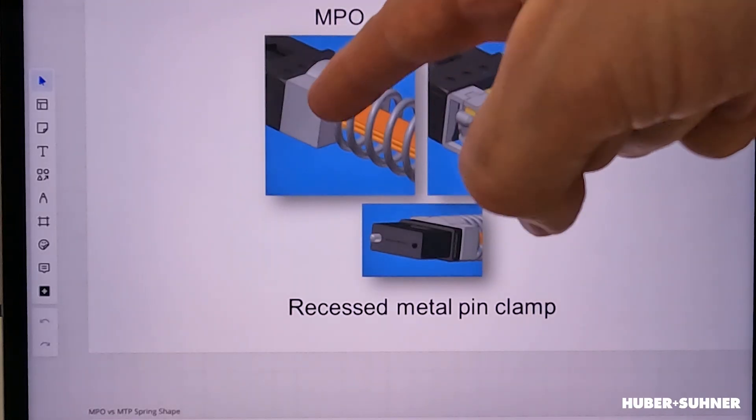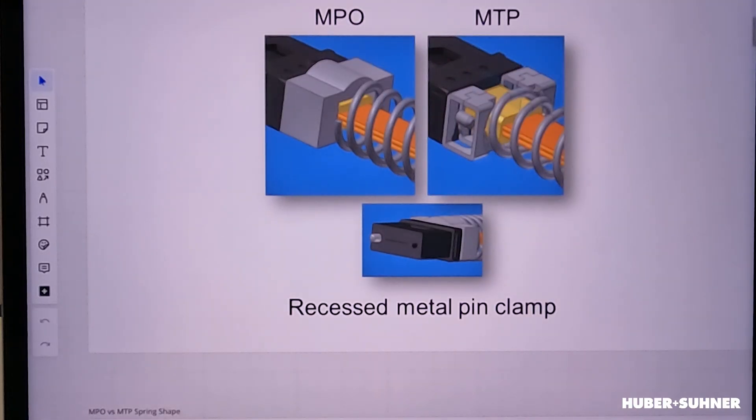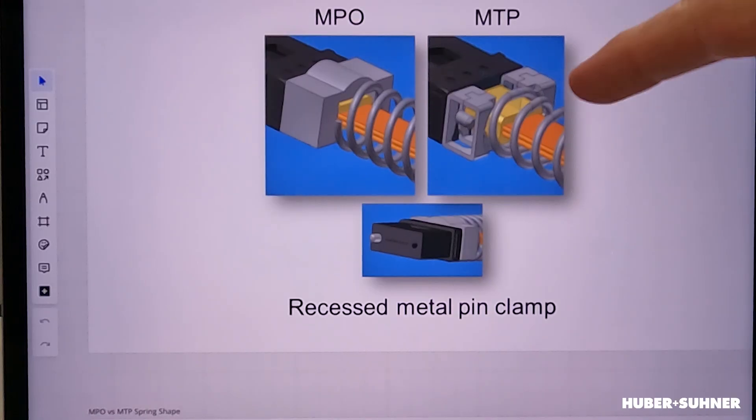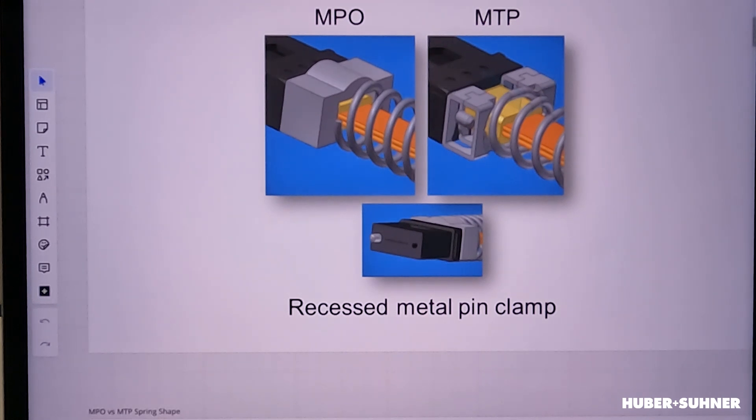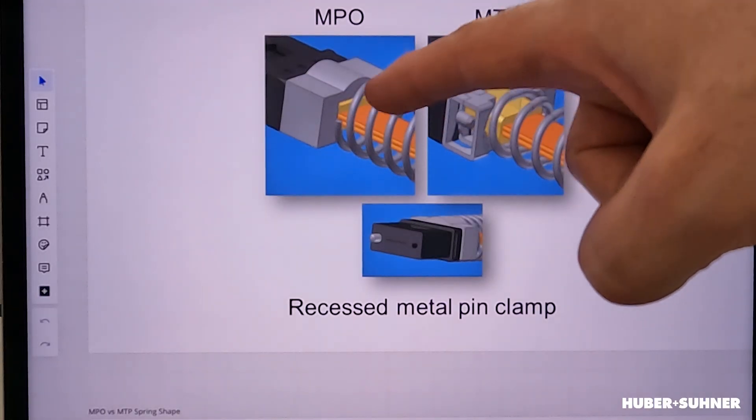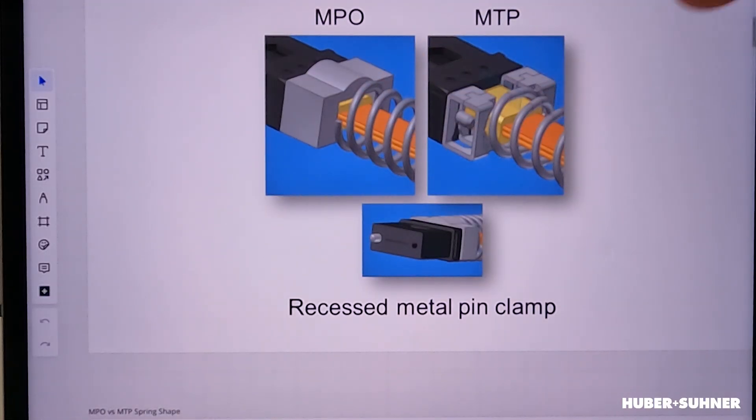Now these pins are actually spring-loaded, and that brings us to the next difference. The MPO connector has the clamp for the pins made out of plastic, and the result was that the pins could break off or snap off. The MTP, on the other hand, uses a metal clamp. Now as I said, they're spring-loaded — so in other words, as you can see here, we've got a spring.